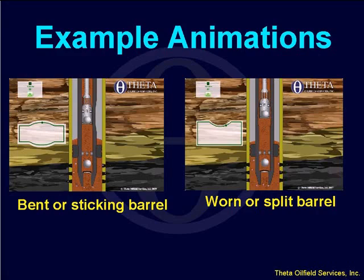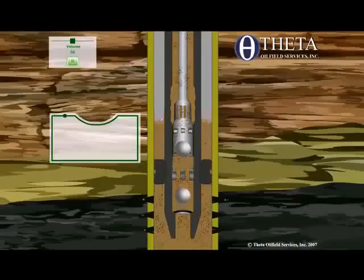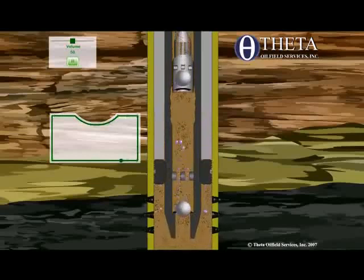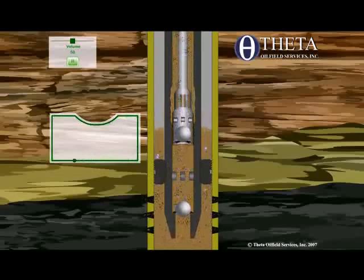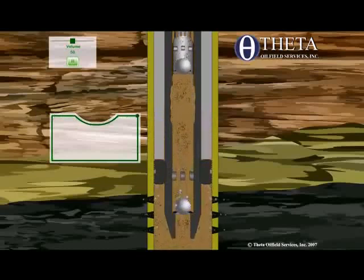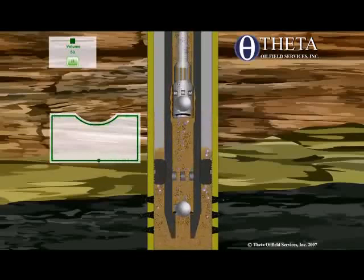This is what happens when you have a worn or split barrel. This is the worn spot in the barrel. When the plunger gets into that section on the upstroke, it loses its pressure difference temporarily. You're going to see a drop in load as it goes through that section, and then as it goes past that section and reestablishes its pressure difference, the load goes back to normal.